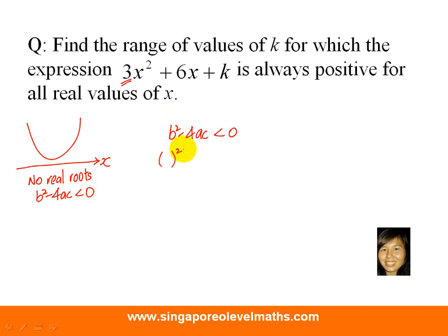We substitute in what is our b. In this case, it is the coefficient of x, which is 6. And our a is 3. C is just simply k. And right now, you are looking at a linear inequality. So, I am going to shift my negative 12k to the left-hand side. Bring it back on the right-hand side, left-hand side. And you have the answer, k is more than 3.